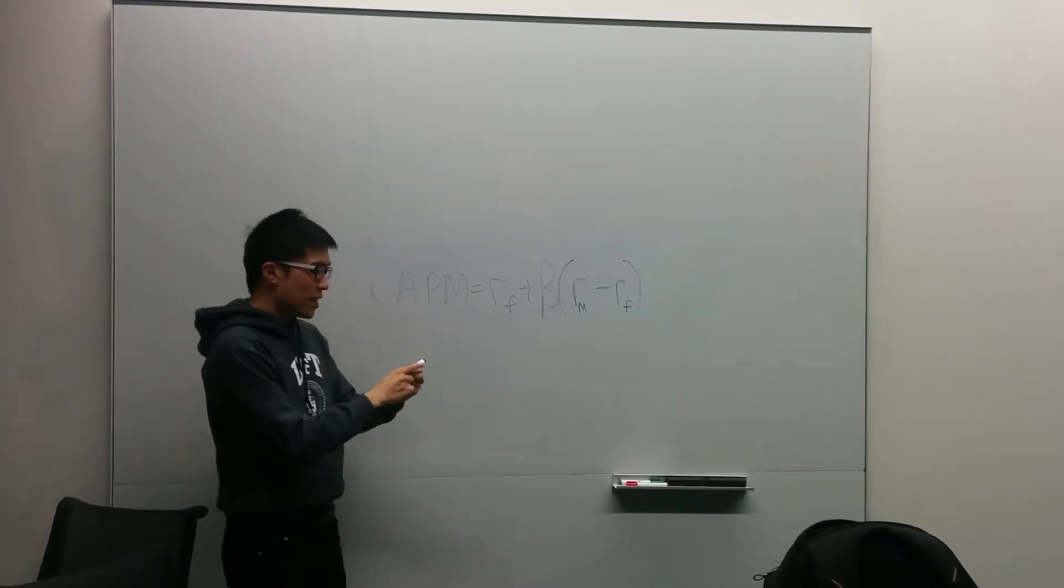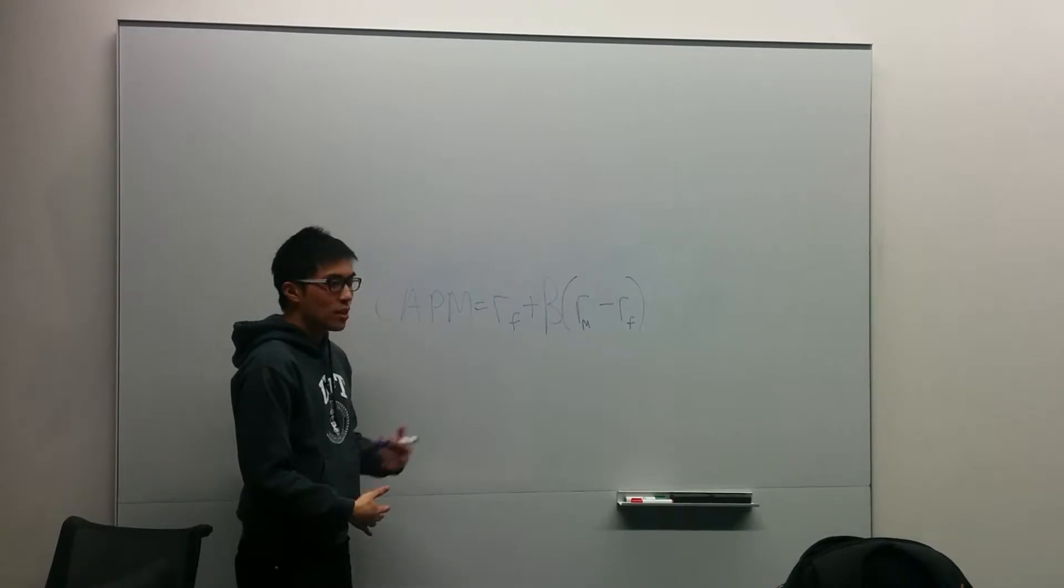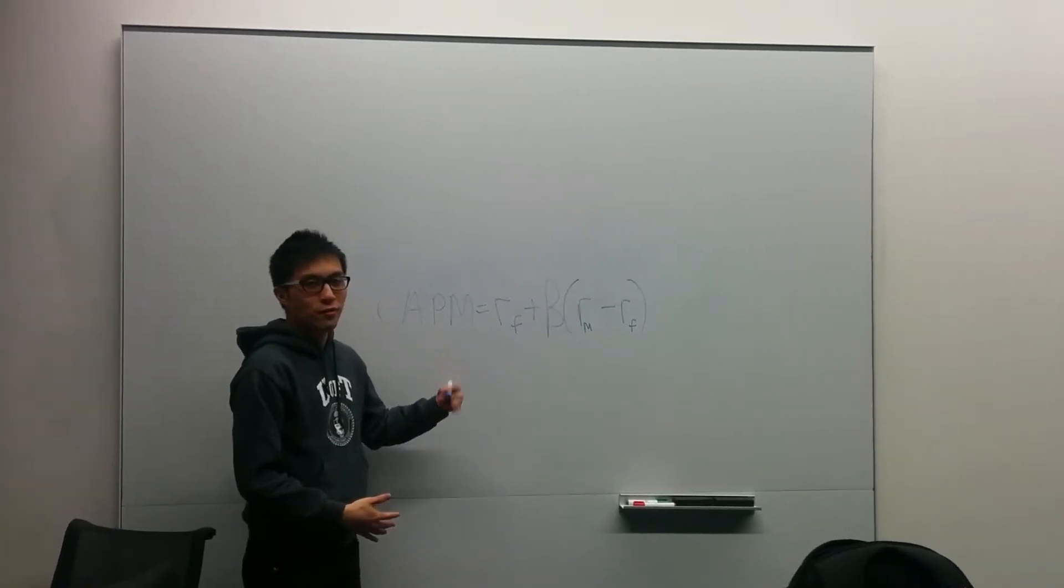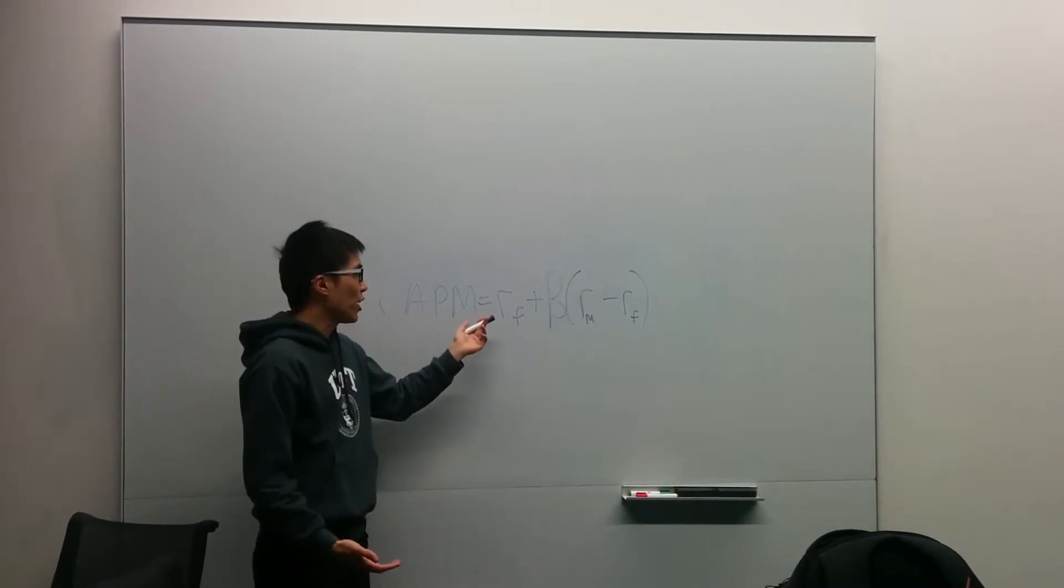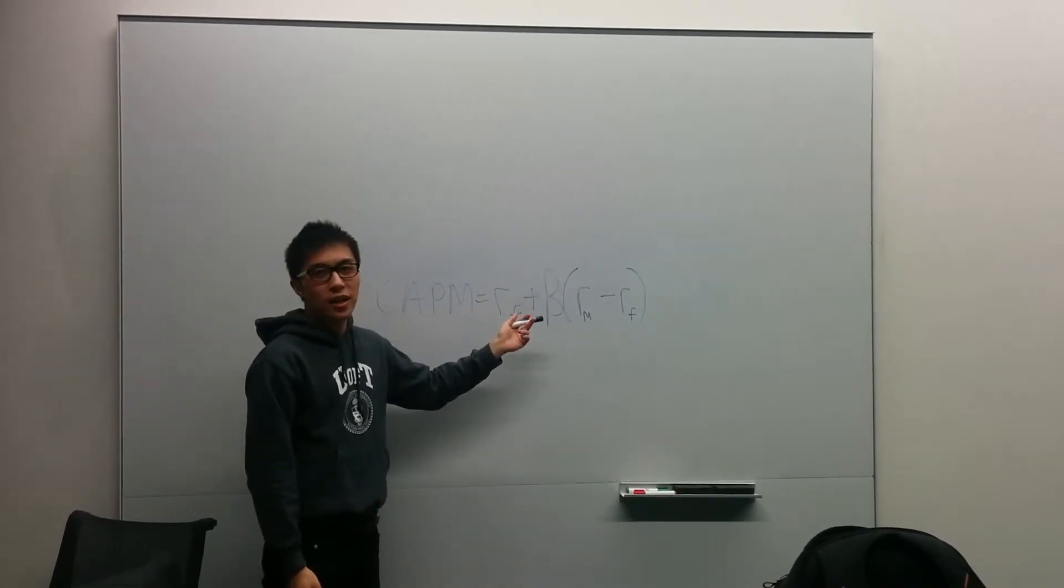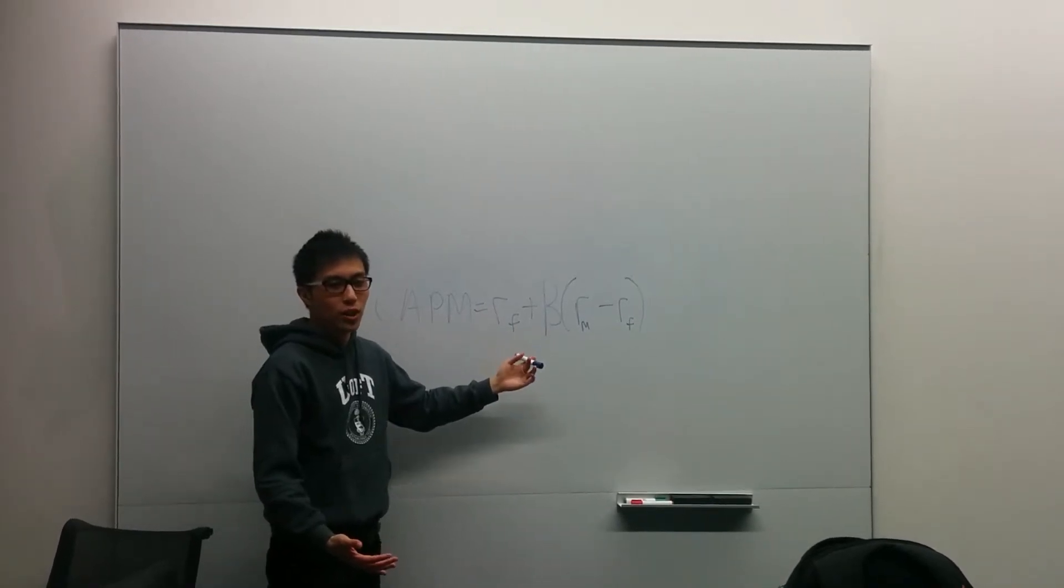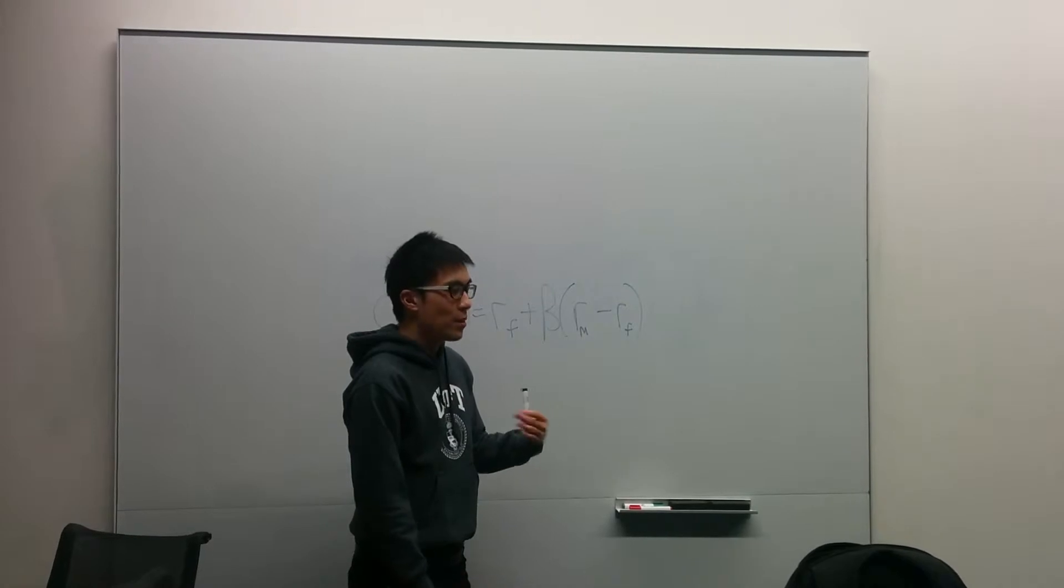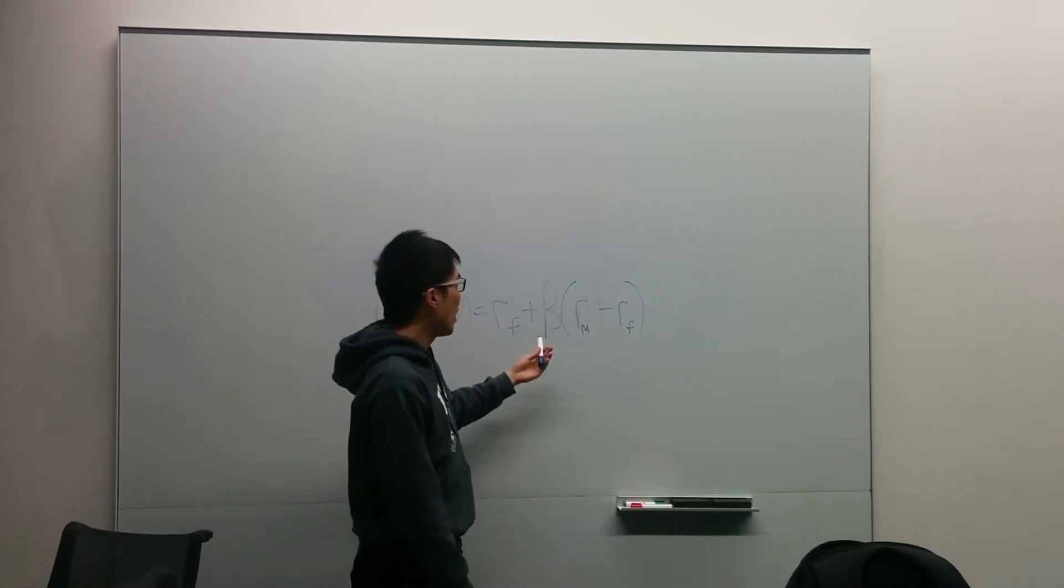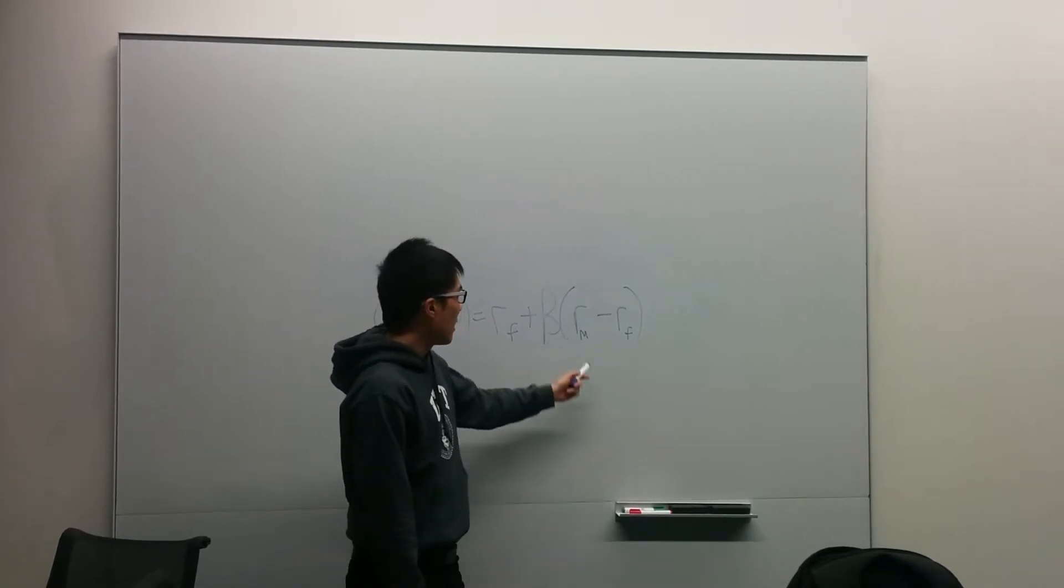Essentially the risk-free rate is for risk-free security what the overall risk-free rate should be. So essentially if the security that you're buying is riskless, the risk-free rate. The beta represents how much it varies with the market. So for example if the market goes 10% and the beta is 1, then it means that the stock goes up 10%.